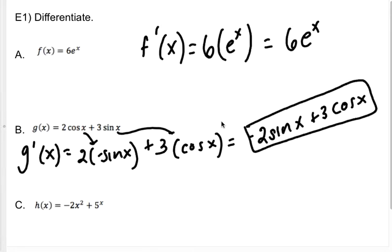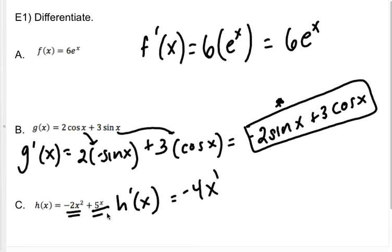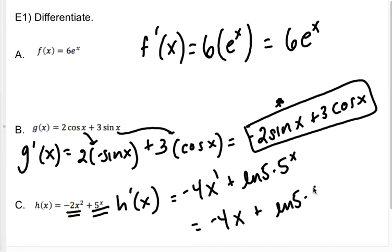Nobody thinks you're cheating if you jump right to this answer. When I differentiate h, my h prime of x — I'm going to do each piece. The derivative of negative 2x squared would be negative 4x. The derivative of 5 to the x — that's the a to the x pattern — is going to be natural log of 5 times 5 to the x. Make sure you don't try to make this a 25, because natural log of 5 is a number by itself and the x exponent is only on the 5.